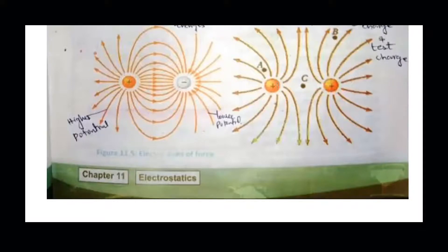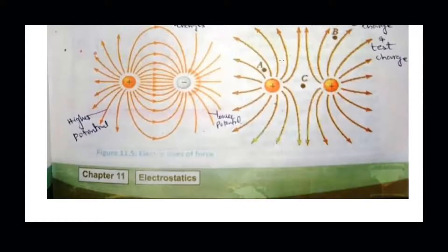In the second figure, this is also important: it shows the field between two like charges — positive and positive. If it is negative and negative, the pattern is the same because the force of repulsion acts. The central point C is considered the neutral point, where the forces of repulsion from both charges balance out.